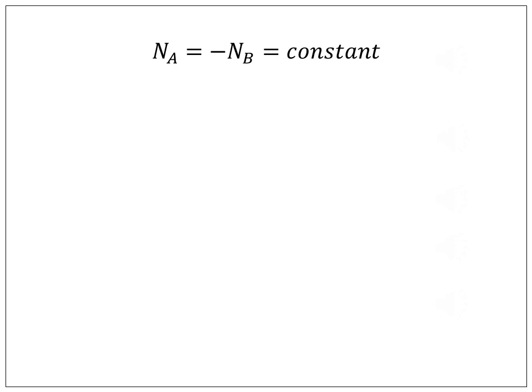Steady-state equimolar counter-diffusion is a situation which frequently pertains in distillation operations. N can be expressed as Na equals minus Nb equals constant. Therefore, Na plus NB equals 0.